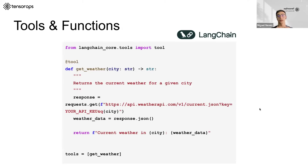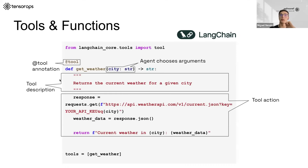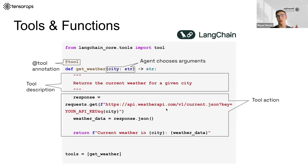Here's an example of how you could build a tool, using Langchain. You import from Langchain and use the tool annotation on your Python function. You have an argument that the agent chooses whenever it calls this tool — for instance, which city to get the weather from. Very interestingly, you have the tool description, which is not really for the developer but for the agent to understand what the tool does, when it should call it, and what it returns. It's very important to be specific here. The tool action goes to the weather API, and at the bottom is the definition of all tools the agent has access to.